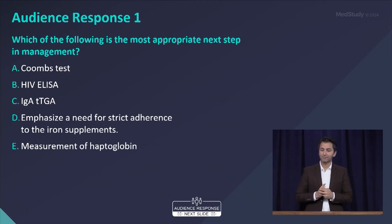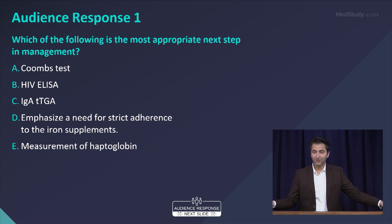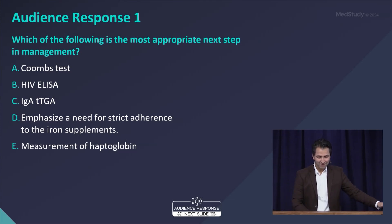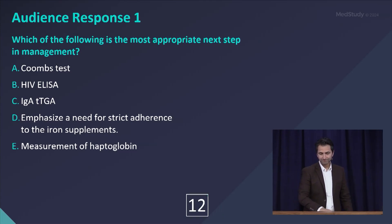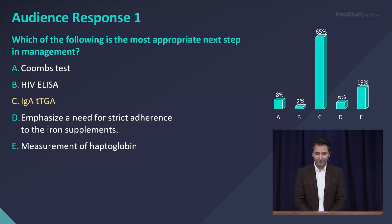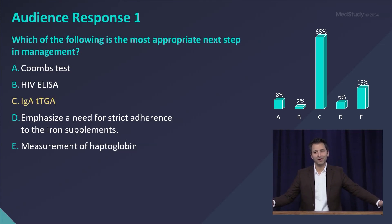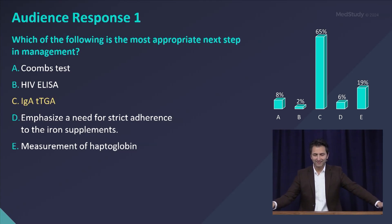The answer choices are: a direct Coombs test, HIV ELISA, IgA tissue transglutaminase, lecturing the patient on compliance, or measurement of haptoglobin. A decent proportion of you correctly identified this as looking like celiac sprue. This is a classic presentation — with sprue, you have an absorption problem in the intestine, so iron is not absorbed properly when given orally. IgA tissue transglutaminase is one of the best diagnostic tests when suspecting celiac sprue.